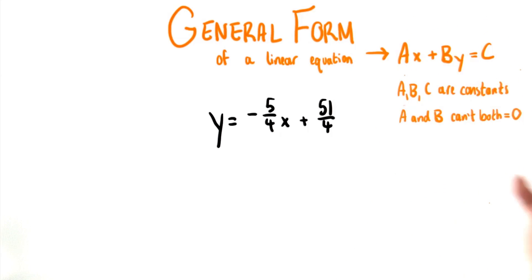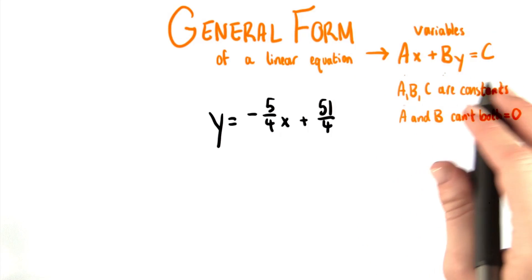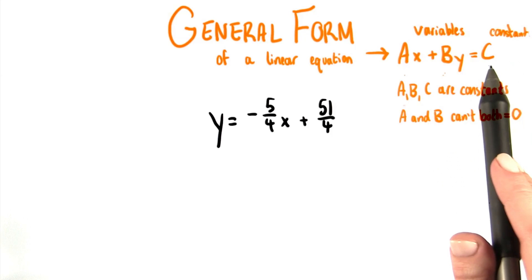What the general form does then is basically shove everything with a variable to one side of the equation and shove all of the constant terms to the other side of the equation. And then, of course, combine whatever constants you have into one number.